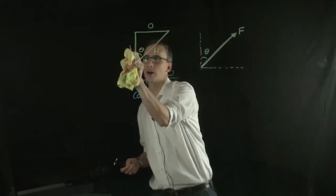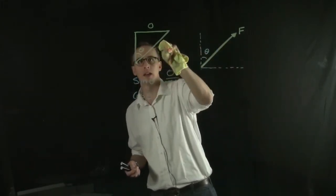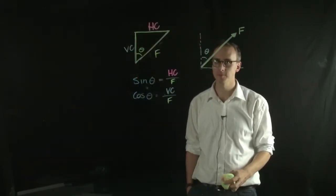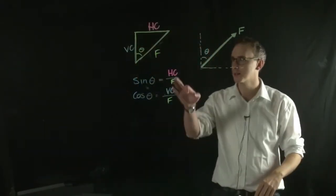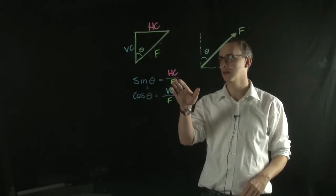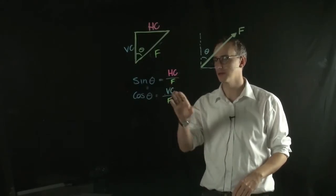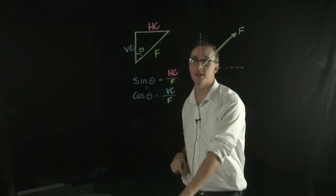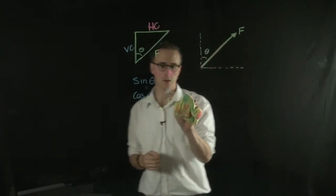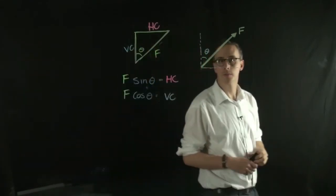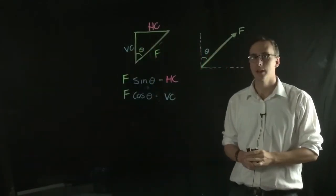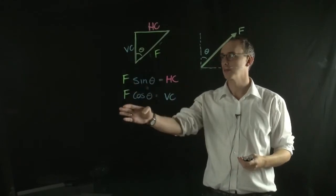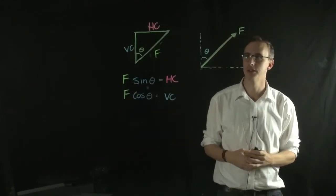So instead of using A and O here, and H, I could write it like this. So I could write it like this, where I have the horizontal component in my force over the force, or the vertical component over my force equal to this. That means if I just multiply both sides by the force, it would look something like this, where F sine theta is the horizontal component and F cosine theta is the vertical component.